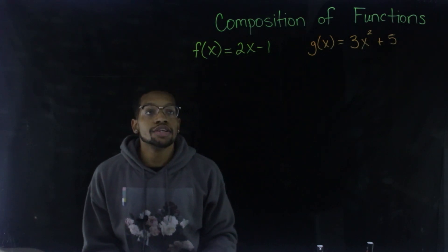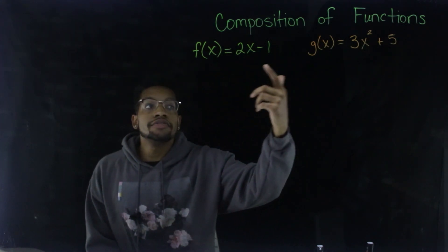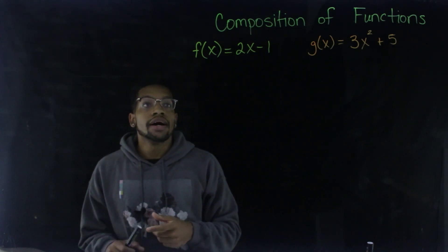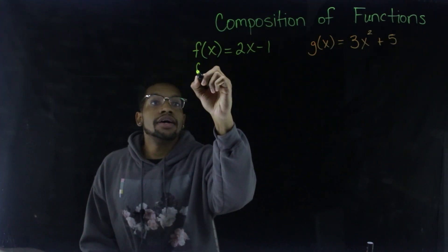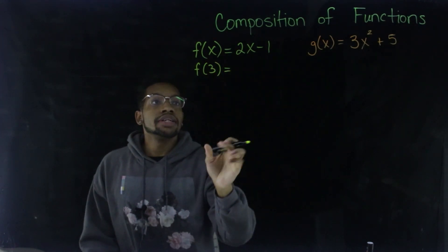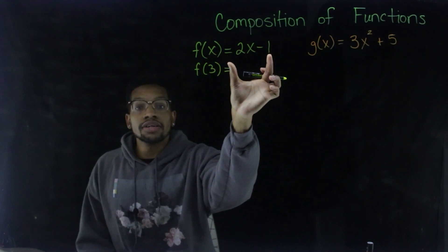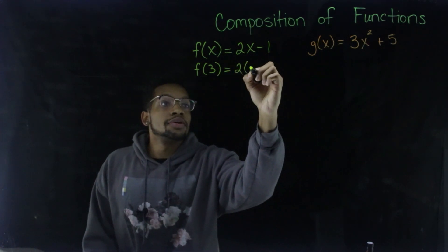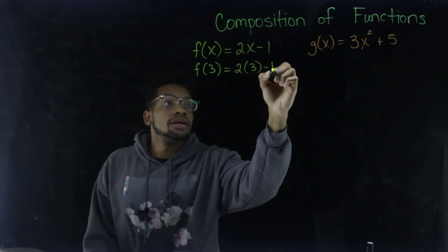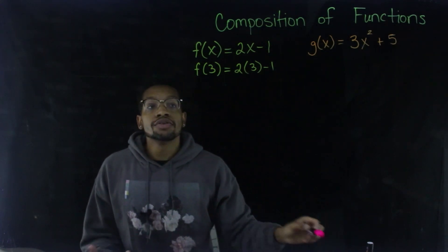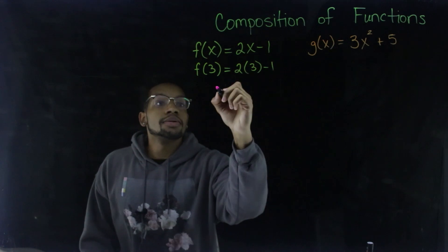All right. So basically composition of functions is where you have two functions, F and G. And you know how usually when you evaluate a function, like let's say if I wanted to find F of three, all you do is in F of X, wherever you see an X, you're going to replace that X with three. So just for the sake of example, it'll be like that. And then when you're dealing with composition of functions, it's going to look something like this.